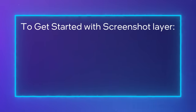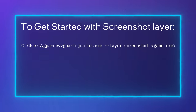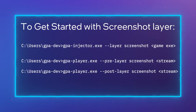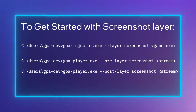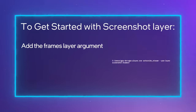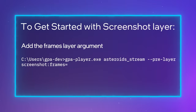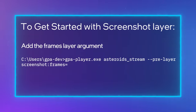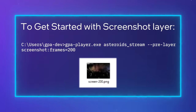To get started with Screenshot Layer, add it to GPA Injector or as a pre-post layer to GPA Player. You'll also need to add the frames layer argument to tell GPA which frames you want to take a screenshot of. For example, this will take a screenshot of frame 200.